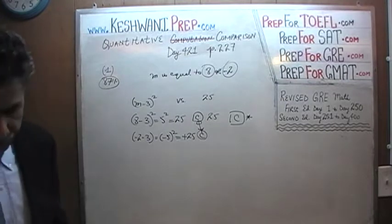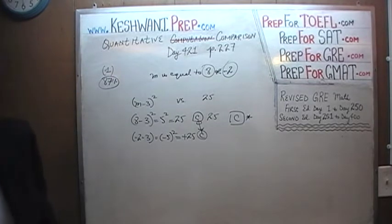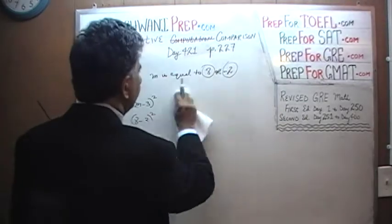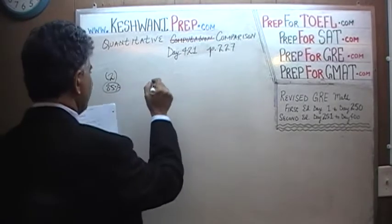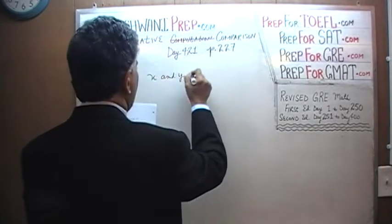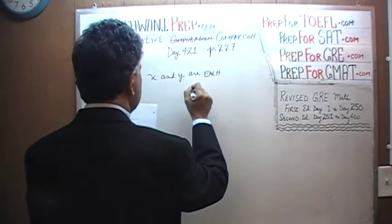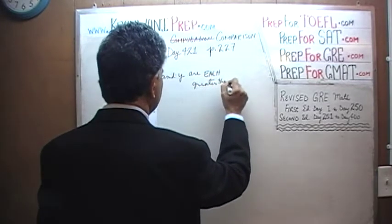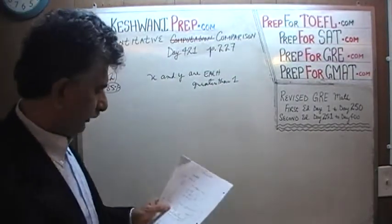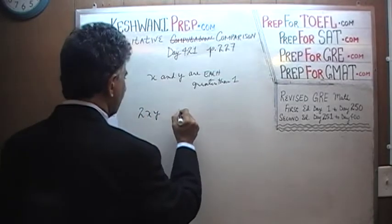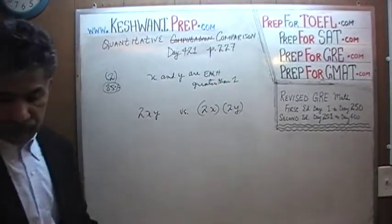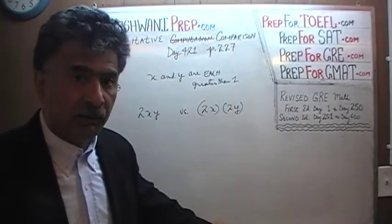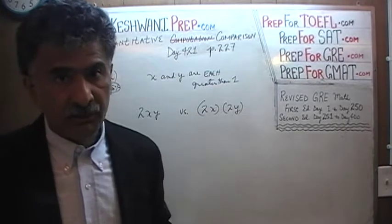Problem number 2 — when it was given in the exam, the percentile was 85. We are told x and y are each greater than 1. We are being asked to compare 2xy versus 2x times 2y. You could plug in different values of x and y, or you can simply solve it algebraically. The algebra in this problem is pretty straightforward.